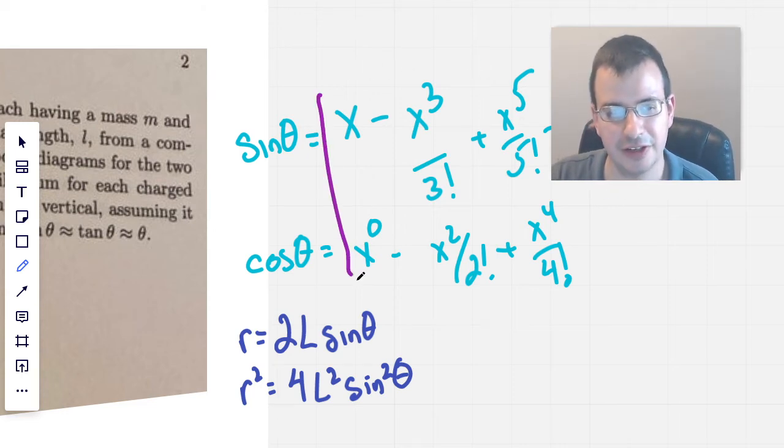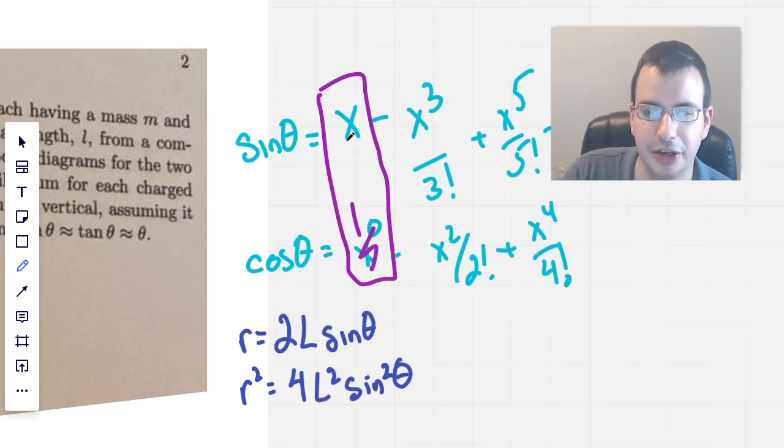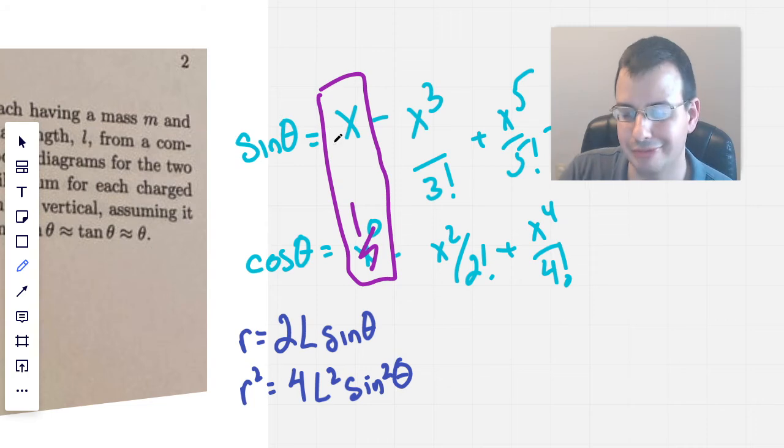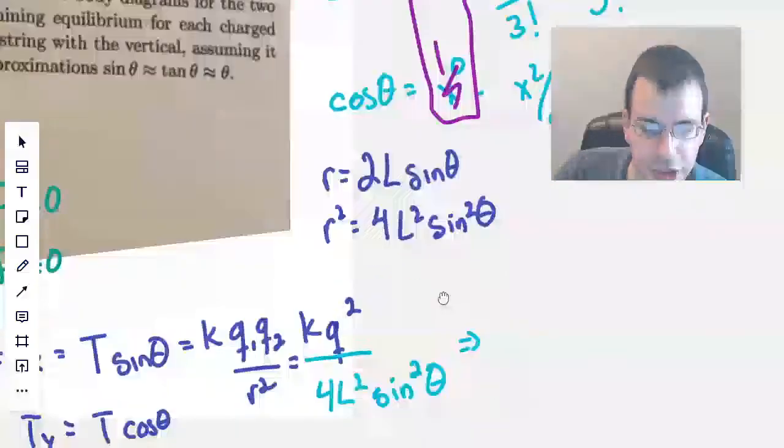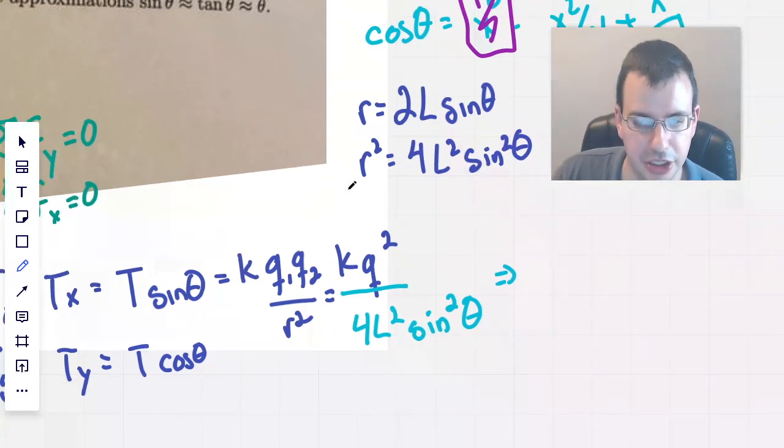And so what the small angle approximation is, is when you have something small and you square it, it gets extra small, almost negligibly so. So what you're saying is, this first order approximation, just the first terms here, this is 1, is close enough. And so that's how you get sine of theta equals theta, right there. And then for cosine of theta, you just have 1. So, that's kind of a way of getting a feel for what the small angle approximation is.